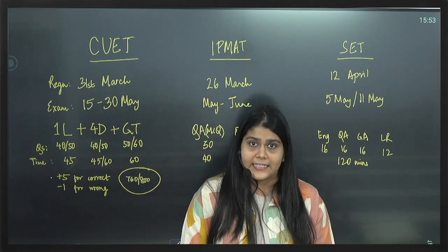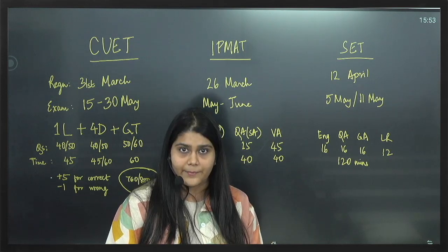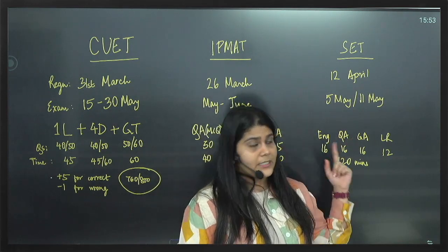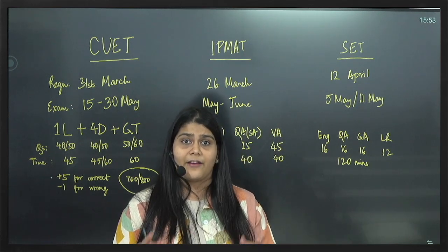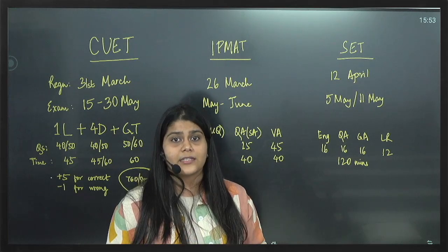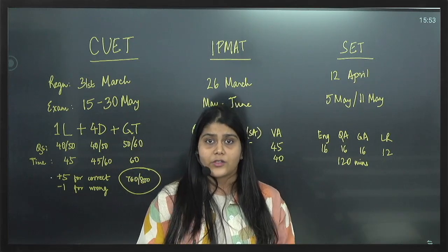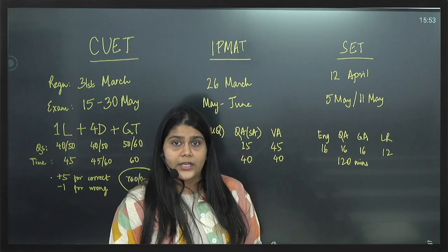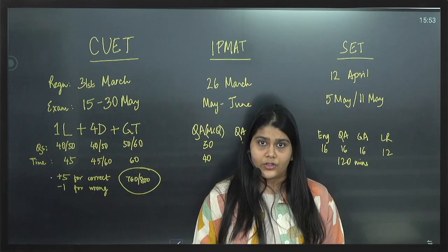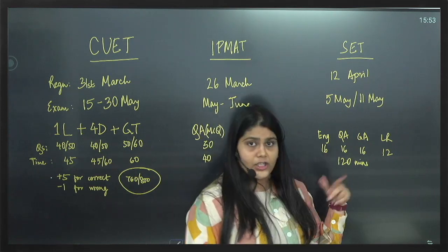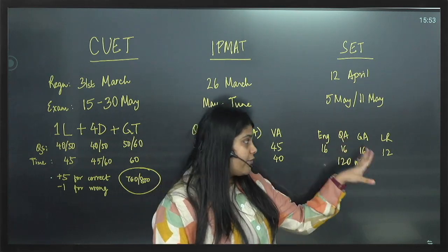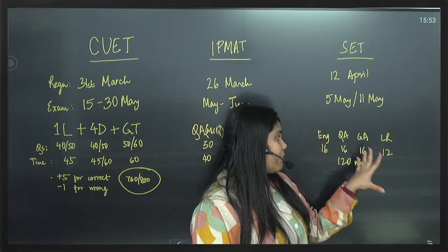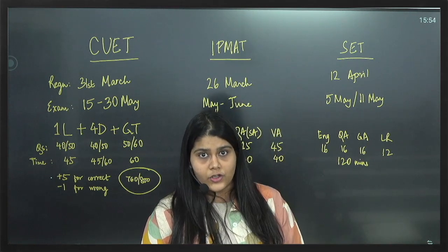Next we have the SET, which is for Symbiosis and its different campuses. Registrations are closing on 12th of April and you get two attempts — 5th May and 11th May. Every student can sit for both attempts and the highest score is counted in the application. This exam has four sections totaling 60 marks with 120 minutes to finish: English or verbal ability, quantitative aptitude, general awareness, and logical reasoning.